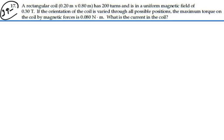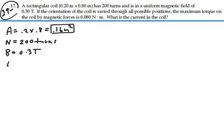Alright, so we're given the area of the coil. That's actually 0.2 meters by 0.8 meters, so that's going to be 0.16 square meters. The number of turns is 200. We have a magnetic field of 0.3 tesla, and our torque is 0.08 newton meters.